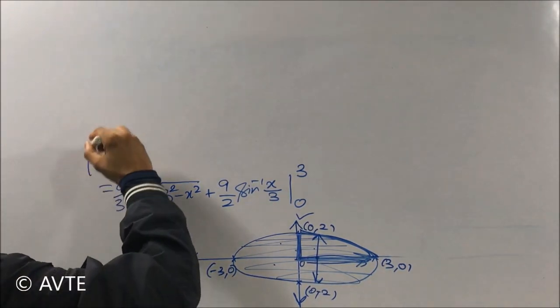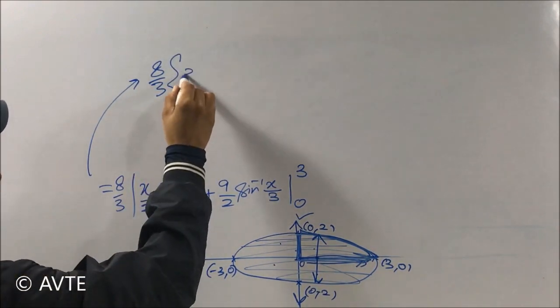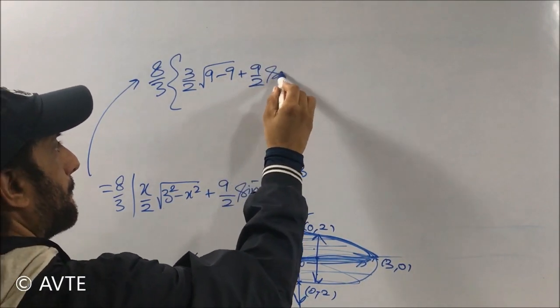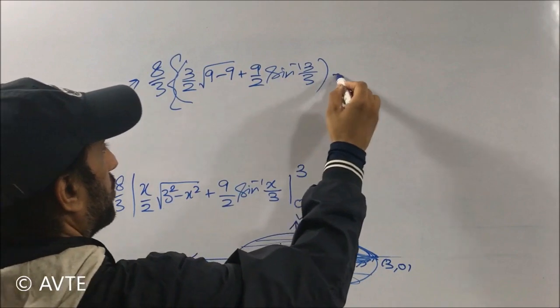Now when we put the limits, it is the upper limit first, and then the lower limit.